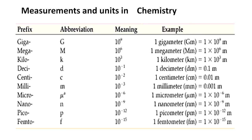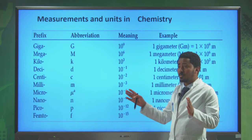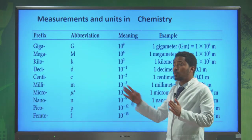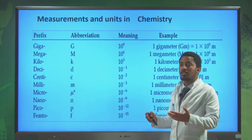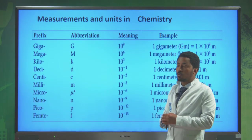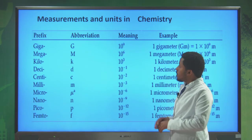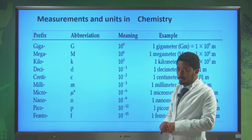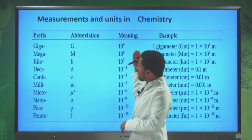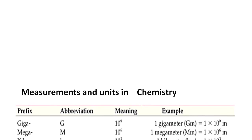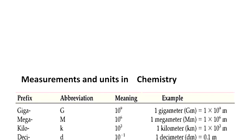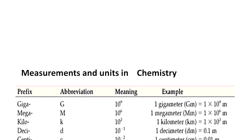Always in chemistry when we are doing measurements, we use SI units. But some measurements might be too large or too small, so we have to use prefixes. For example, giga means 10 to the power of 9, mega means 10 to the power of 6, and kilo means 10 to the power of 3.